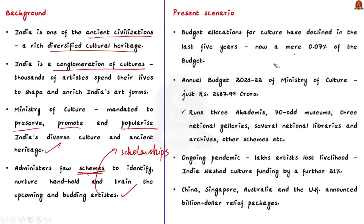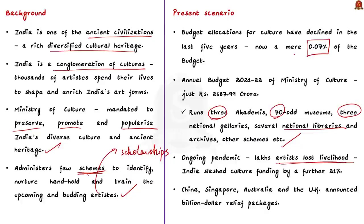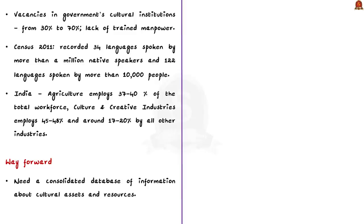Budget allocations for culture have been declining in the last five years, standing at a mere 0.07% of the recent budget. The outlay for the annual budget 2021-22 for the Ministry of Culture is around Rs. 2,600 crores — very minimal considering the Ministry runs three academies, 70-odd museums, three national galleries, several national libraries and archives, and many other schemes. The issue of under-financing of arts and culture was brought to light by the ongoing pandemic, during which lakhs of people in the arts community suffered with no income. While countries like China, Singapore, Australia and the UK announced billion-dollar relief packages, India slashed culture funding by a further 21%. Vacancies in government cultural institutions range from 30% to 70%, and lack of trained manpower is another problem.